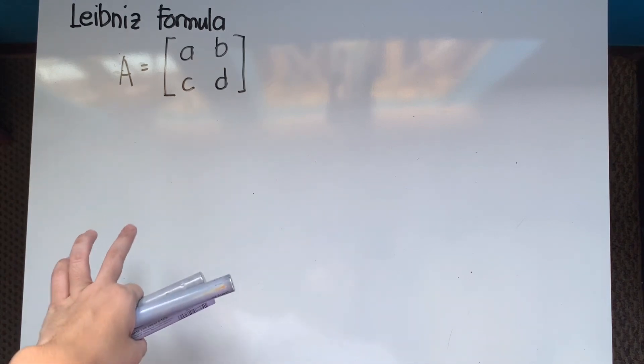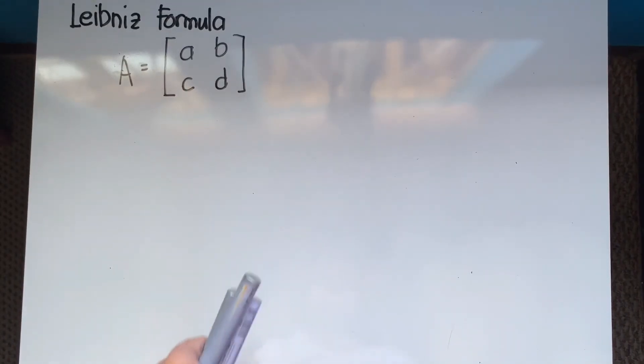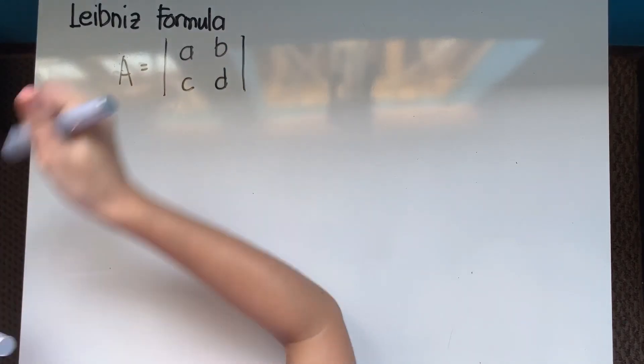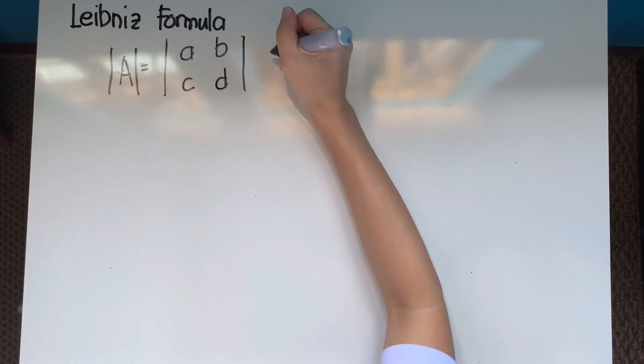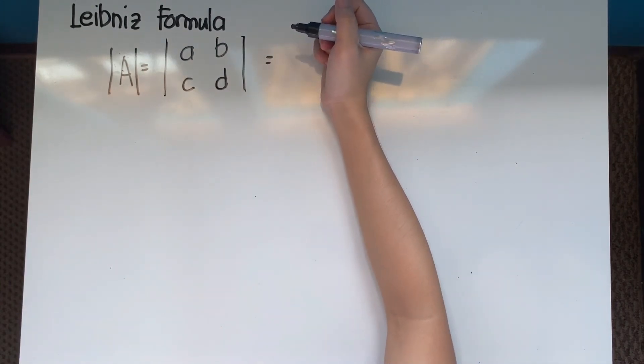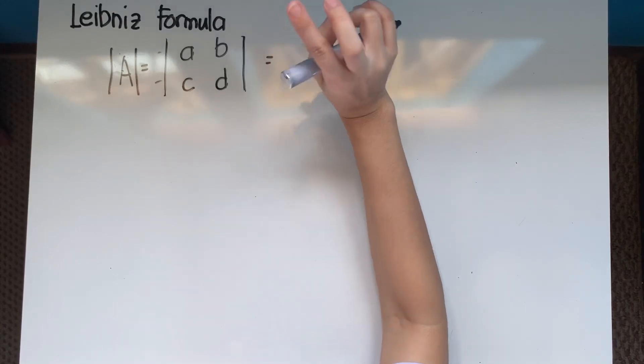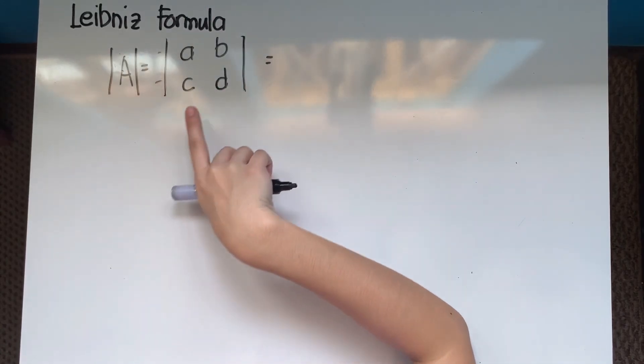Let's start with a 2x2 matrix using the Leibniz formula. When solving for a determinant of a 2x2 matrix using Leibniz formula, instead of elaborating the notation, I'll show you the steps. You remove the matrix brackets to indicate the determinant. With Leibniz formula, you choose one entry from each row — since it's 2x2, one entry from the first row and one from the second row.